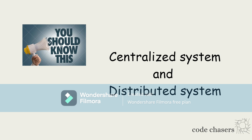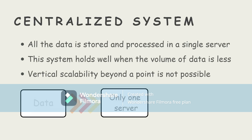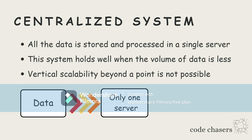The first term is centralized system. In a centralized system, all the data is processed and also stored in a single server. This system holds well when the volume of data is less. But if we see the present world, all the activities of humans are being digitalized and we need to store the data somewhere.